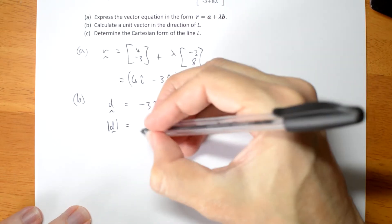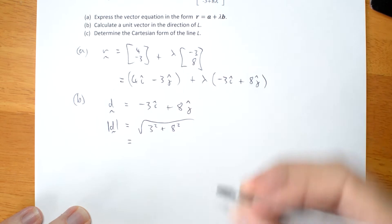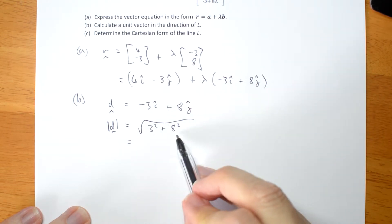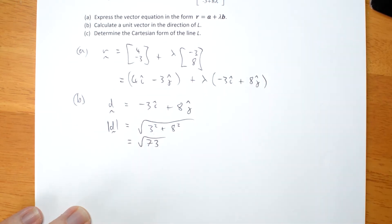The length of D is 3 squared plus 8 squared, which is 9 plus 64, which is 73, which I believe is prime. So I can't simplify that.